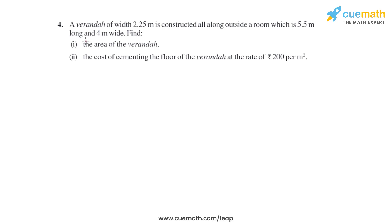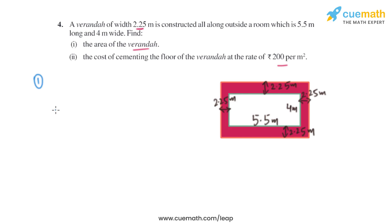Question 4 of this exercise says: A veranda of width 2.25 meters is constructed all along outside a room which is 5.5 meters long and 4 meters wide. Find the area of the veranda and the cost of cementing the floor at a rate of rupees 200 per square meter. So let's find the area of the veranda.